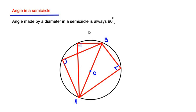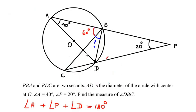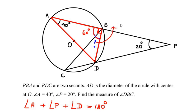Using this theorem in the example: AD is the diameter of the circle, and it makes an angle at point B, which means the total angle at point B is 90 degrees. A part of that 90 degrees is angle ABC, which is 60 degrees. To find the smaller angle DBC, we subtract: 90 degrees minus 60 degrees, which gives us 30 degrees.